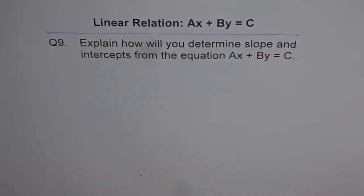Linear relations of the type AX plus BY equals to C. Here is question number 9. We are almost coming to the end of this set of 10 questions.